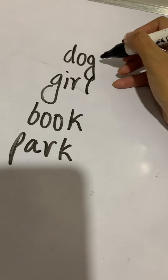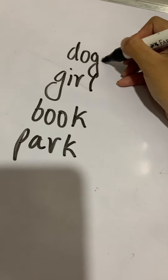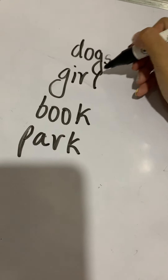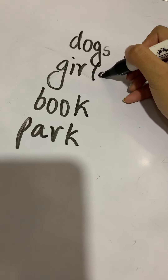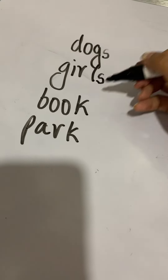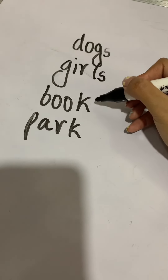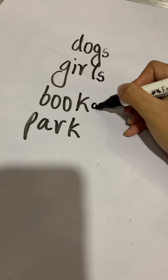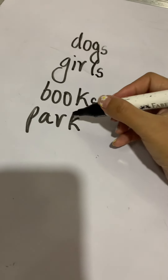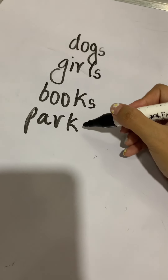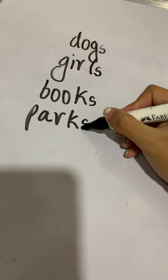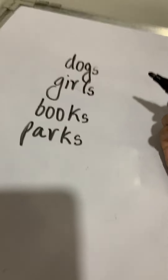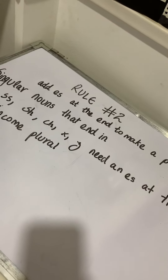Dog becomes dogs. Girl becomes girls. Book becomes books. Park becomes parks. Easy, isn't it?